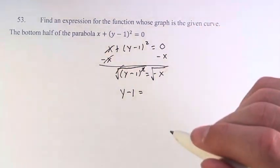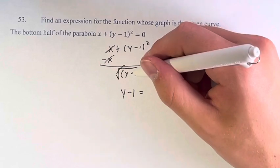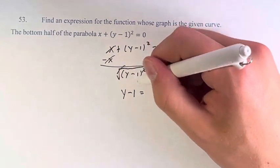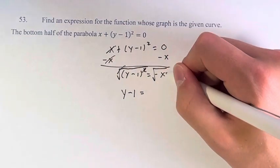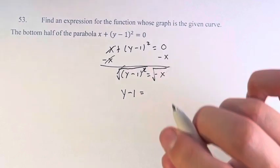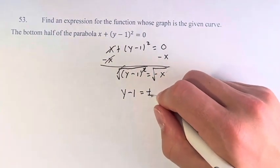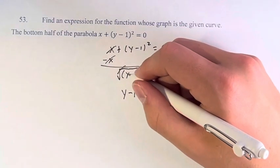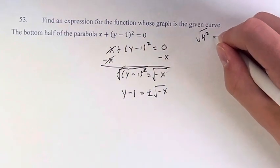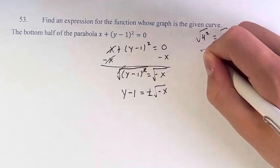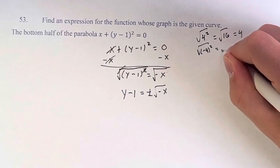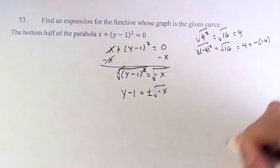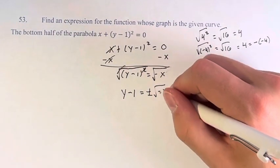It's a little more complicated than that, though, because we don't know whether y minus 1 is positive. If y minus 1 is negative, it's actually equal to negative the square root of negative x. So we have to say this is equal to positive or negative the square root of negative x. For example, the square root of 4 squared is 4, because that's the square root of 16. But the square root of negative 4 squared is also the square root of 16, which is 4 — not negative 4. That's what we're doing here: it's plus or minus the square root of negative x.